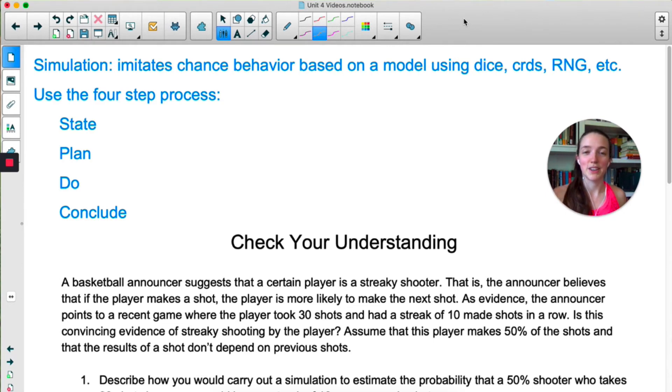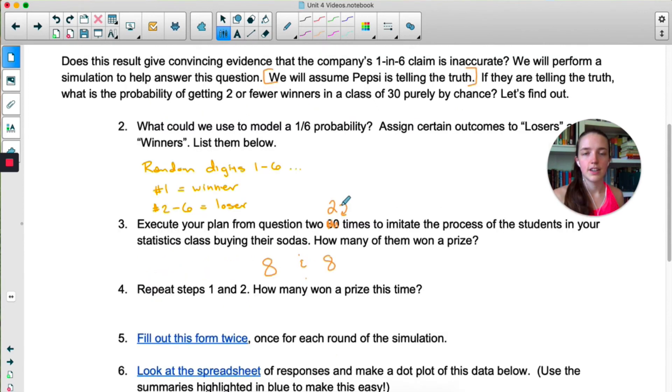When you do a simulation, you always want to hit the four step process. This four step process is going to come up so much. I can't take credit for this, it comes from one of the most popular statistics textbooks. It's called different things in different places, but if you follow this process for most kind of free response type questions, it ensures that you won't forget anything that the College Board is looking for. So here's the four step process: State, Plan, Do, Conclude. I'm not going to give you an acronym for that because you're going to do it so much that you'll just remember. State is where you just ask the question that you want to answer, which seems kind of silly, but it actually is really important. Number one, state - they actually did for us in these directions: What is the probability of getting two or fewer winners in a class of 30 purely by chance? There, we've stated the problem.